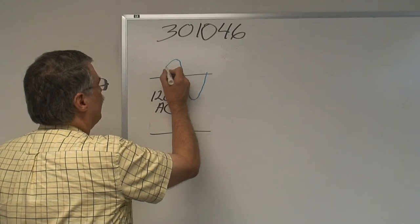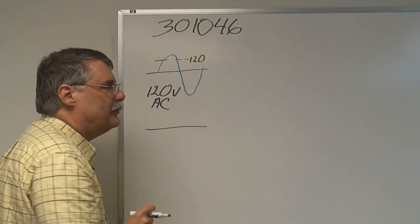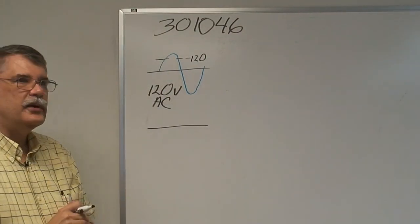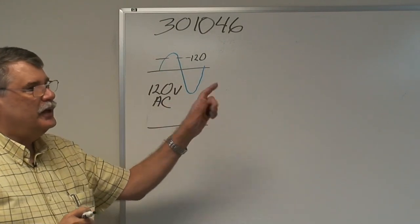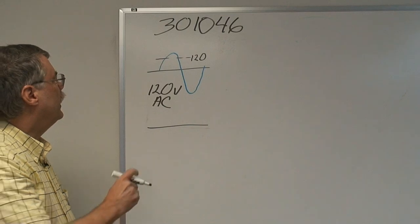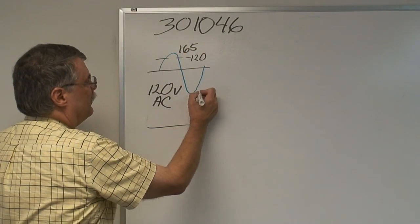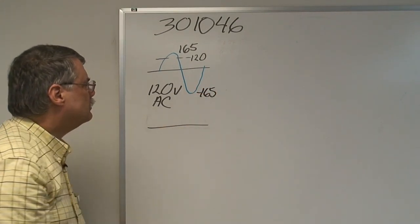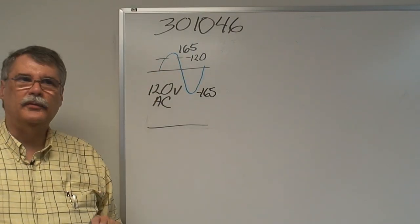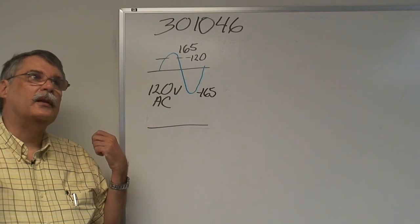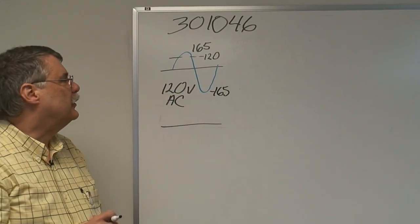The 120 volt level is the average value of the energy that is put out by the sine wave. The voltage is continually changing and has a peak value of 165 volts and a negative peak value of minus 165 volts. The average value under each of these curves turns out to be 120 volts, which really relates to the amount of power that something that generates heat would take out of this waveform.